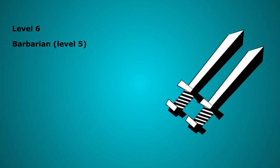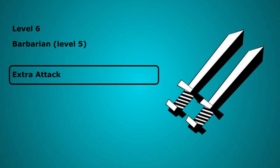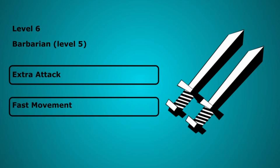Level 6 we take Barbarian to level 5. Here we get the extra attack feature letting us make 2 weapon attacks per turn bringing your average damage per turn to 28 while raging. Level 5 Barbarians also get fast movement which increases your speed by plus 10 while you aren't wearing heavy armour.